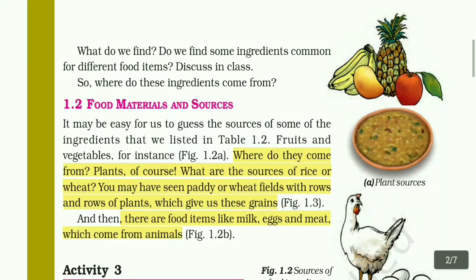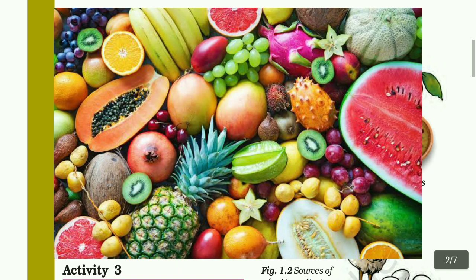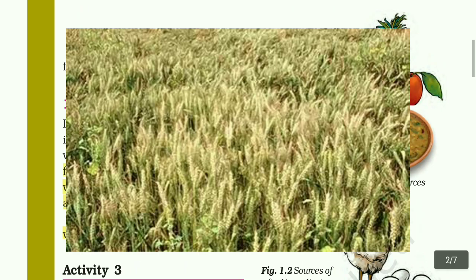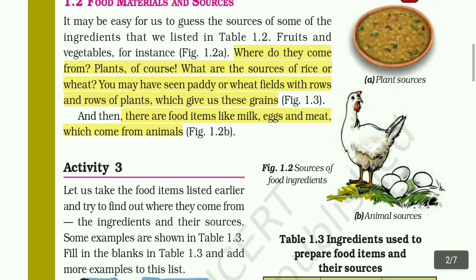Food materials and sources. It may be easy for us to guess the sources of some of the ingredients listed in table 1.2. Fruits and vegetables, for instance, come from plants. We eat rice and vegetables from plants. What are the sources of rice or wheat? You may have seen paddy or wheat fields with rows and rows of plants which give us these grains.